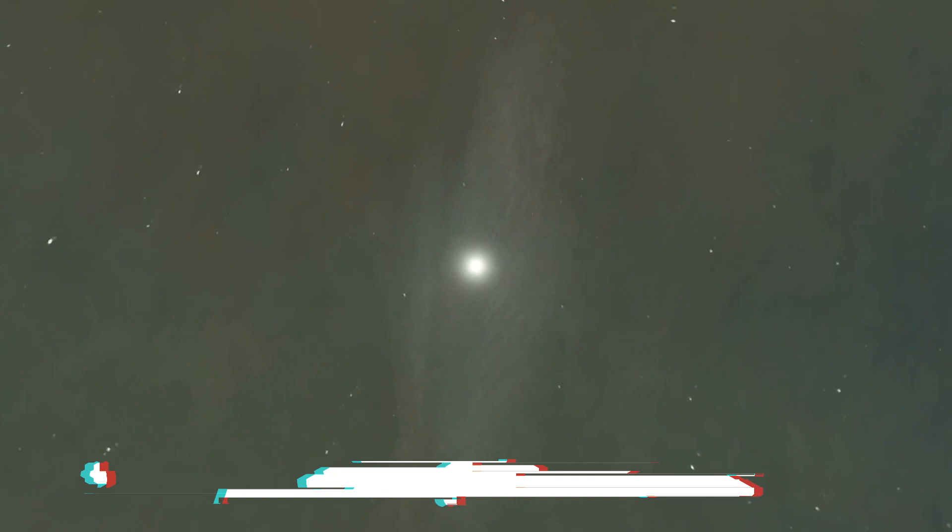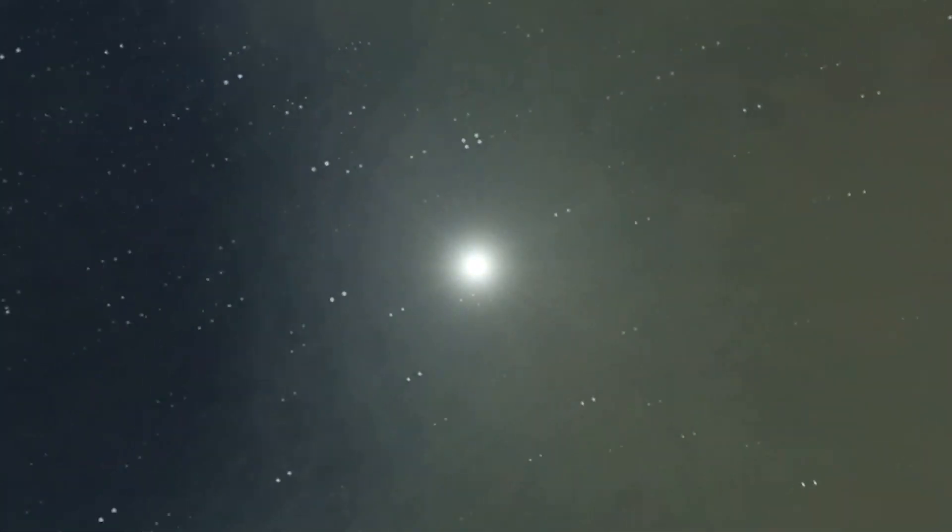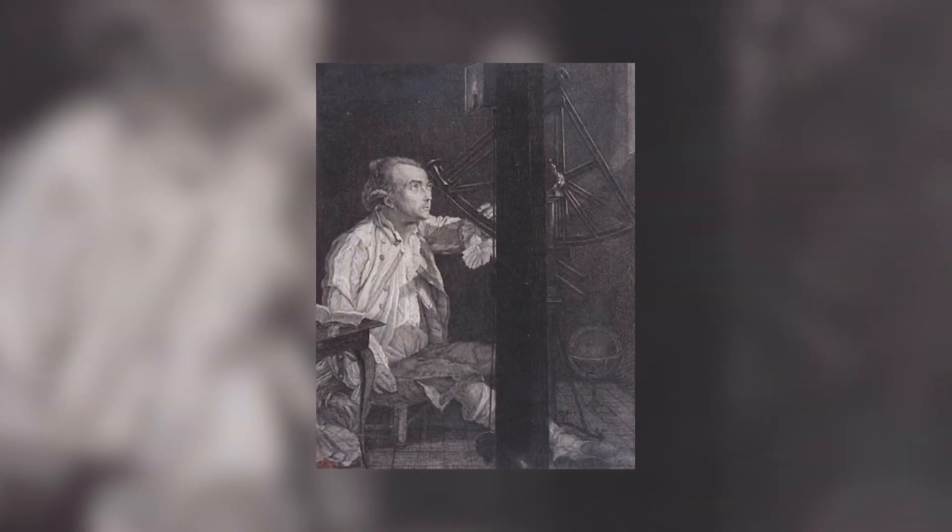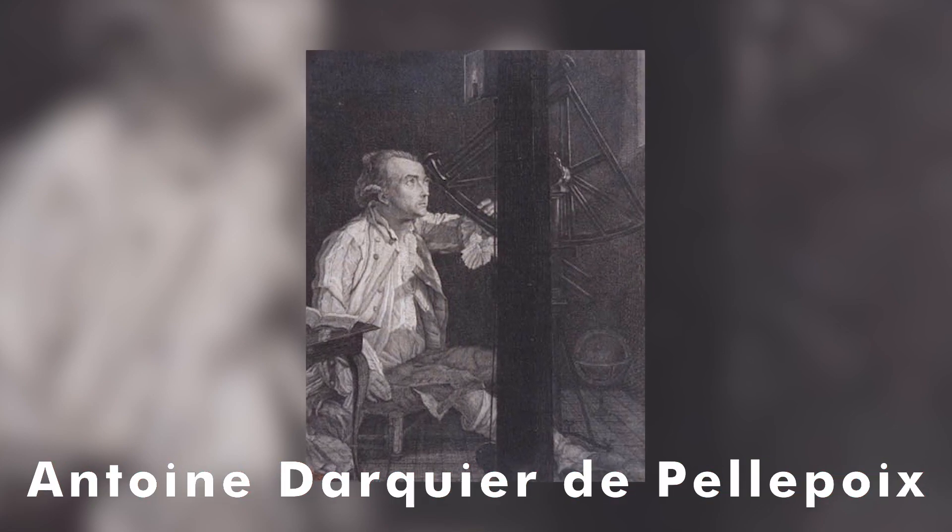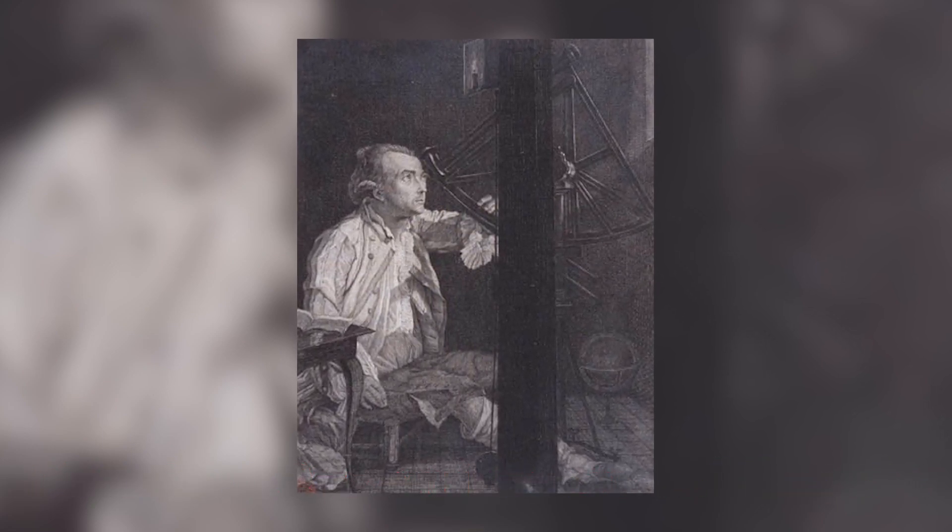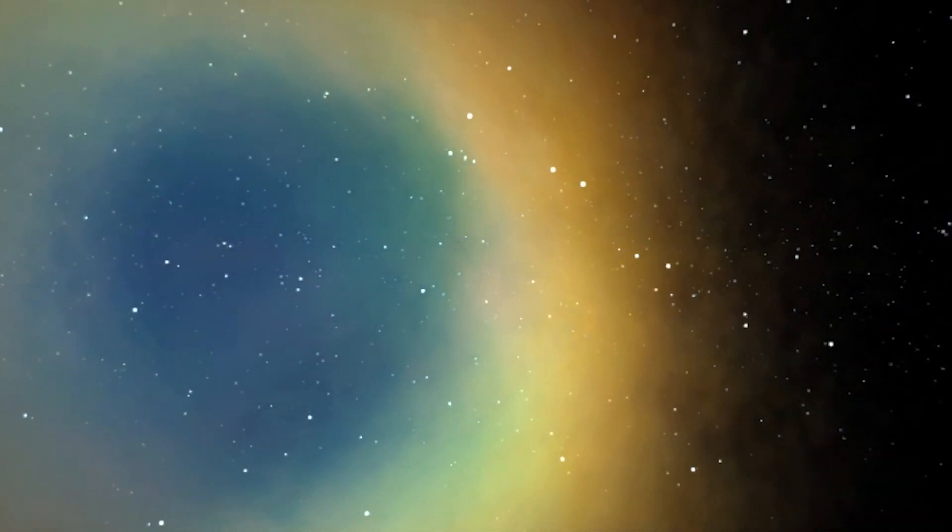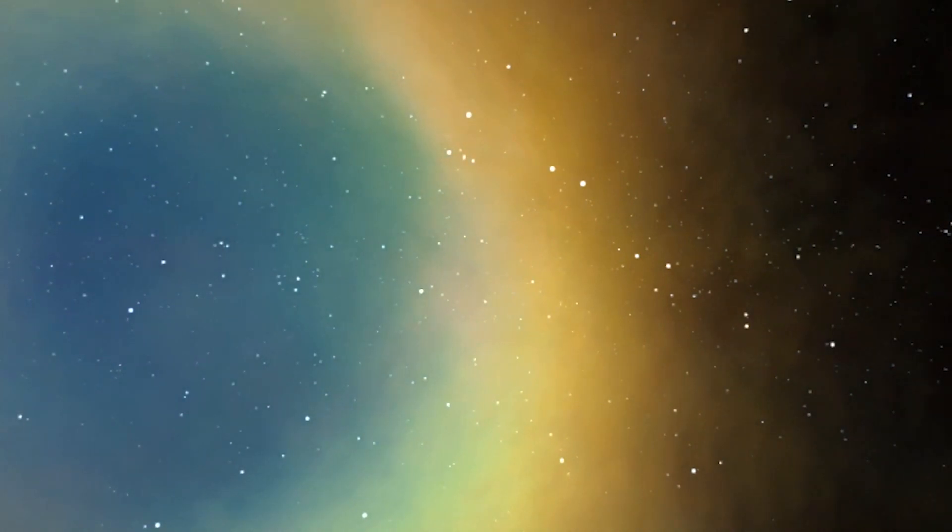M57 is about 2,000 light years away in the constellation Lyra, and is best observed during August for all you summer stargazing fans. Discovered by French astronomer Antoine D'Arcouillet de Pelpois in 1779, the Ring Nebula has an apparent magnitude of 8.8, and can be spotted with moderately sized telescopes.